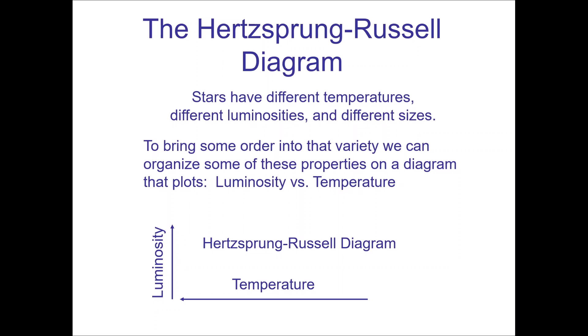A couple of astronomers, somewhat independently, developed a visual means to organize all of this data. The two individuals are Ejnar Hertzsprung and Henry Norris Russell. Because of their efforts, this visual diagram that they created is named after them. It's called the Hertzsprung-Russell Diagram, and we sometimes just abbreviate that to HR Diagram.